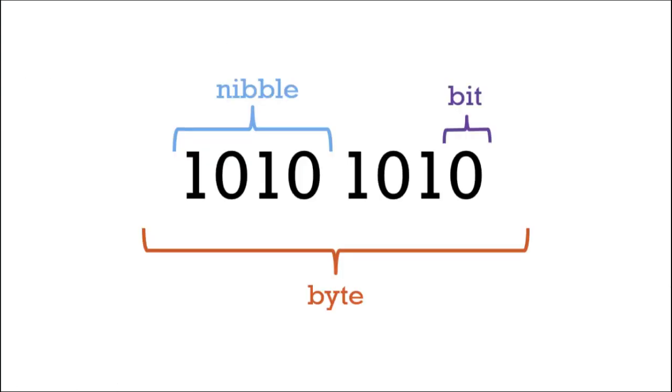So firstly let's talk about the anatomy of a binary number. One binary number, so a 1 or a 0, is referred to as a bit. 8 binary numbers is called a byte and half of a byte, so 4 digits, is called a nibble. When we're writing out binary numbers, usually we put a space in between each nibble just so that it's easier for us to read.